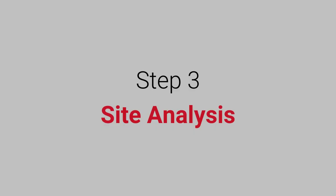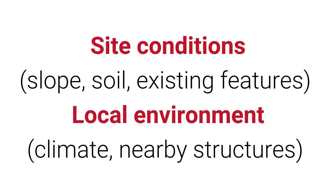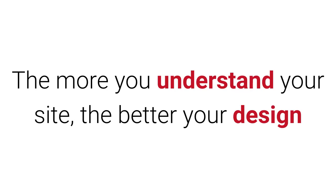Step 3: Site analysis. Site analysis really covers two aspects. The first is site conditions, where you look at the slope of your site, the soil, and any existing features on your site. The second is local environment, such as your local climate, or any nearby structures from neighbouring properties that may have an influence on your site. The more you understand about your site, the better your design will be.